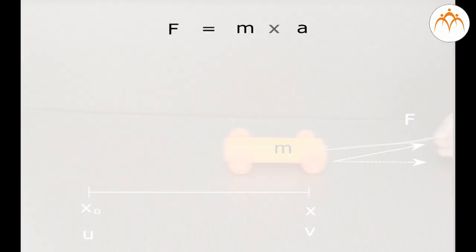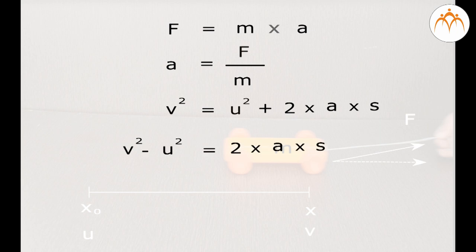Its acceleration a is equal to f over m. Constant force gives constant acceleration. So we can use the third equation of motion to relate the displacement s to the initial and final velocities. The total force is constant and parallel to the displacement, so the work is f times s.